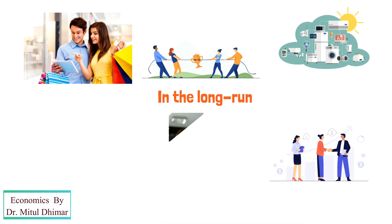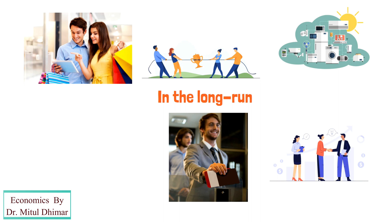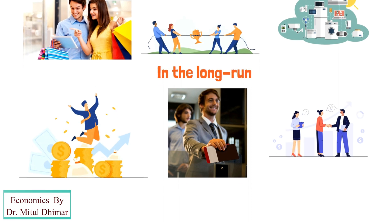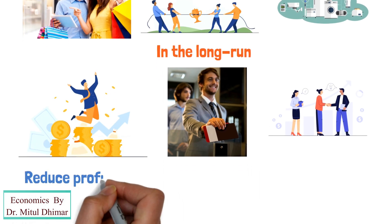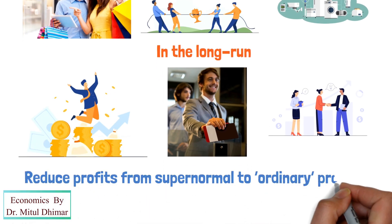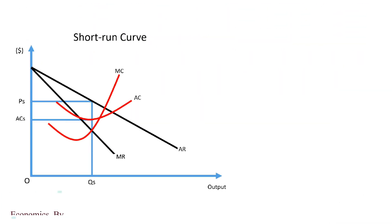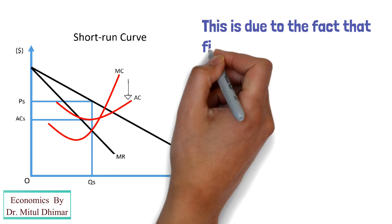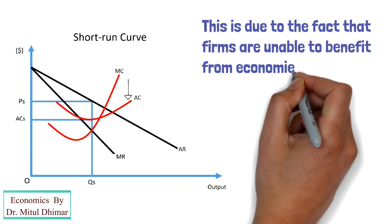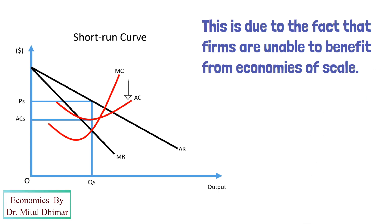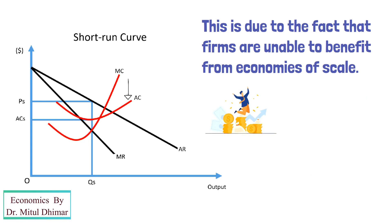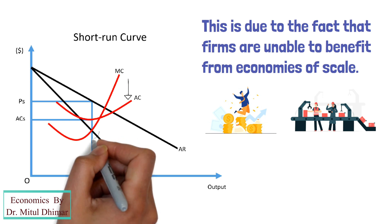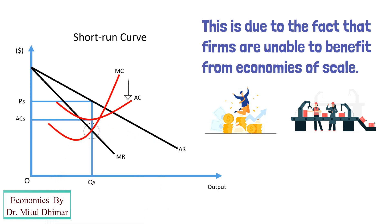In the long run, competitors will flock into the market to make profits from the new design and reduce profits from supernormal to ordinary profits. As we can see from the graph, average costs increase as new entrants enter the market, due to the fact that firms are unable to benefit from economies of scale. To begin with, the firm making supernormal profits will increase production so that marginal cost is equal to marginal revenue.